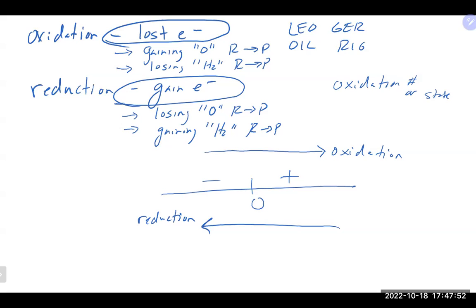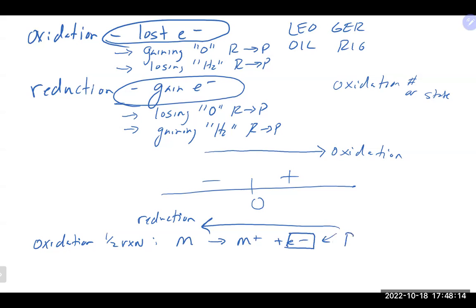An oxidation half reaction — sometimes called the oxidation half reaction — looks like this: the electrons are always on the product side, meaning they are being lost or given off. If you see a reaction where electrons are on the product side, that is definitely an oxidation event occurring.